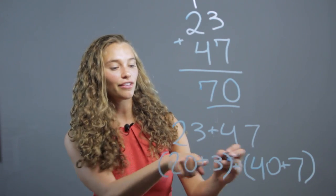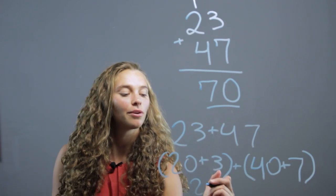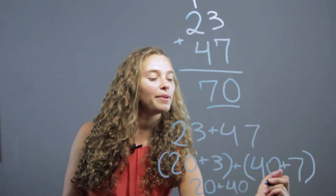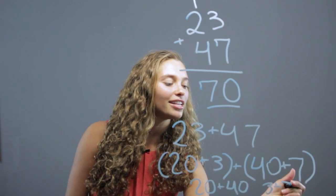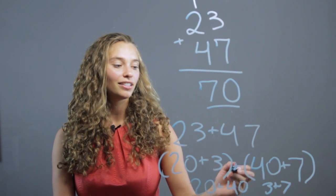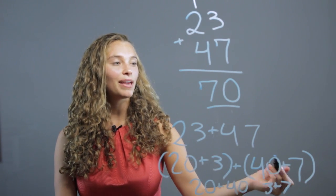So we can look at the twenty and the forty. We have twenty plus forty, and then we have three plus seven. We add the twenty and forty together to make sixty, and the three and the seven make ten.